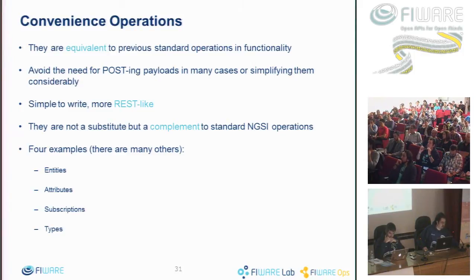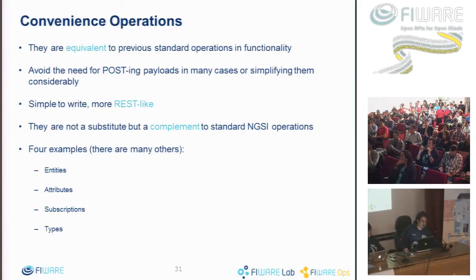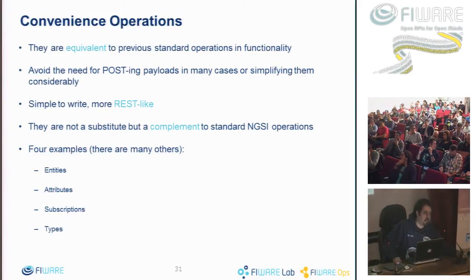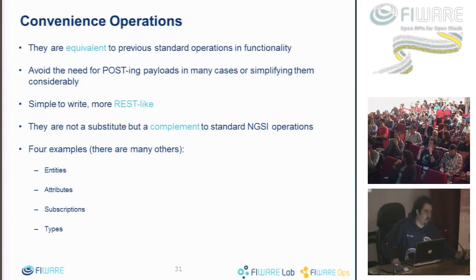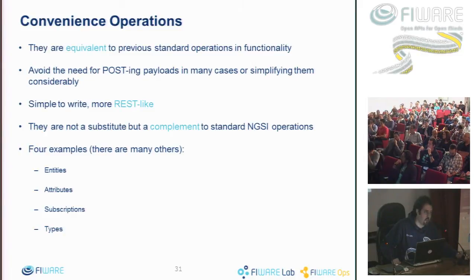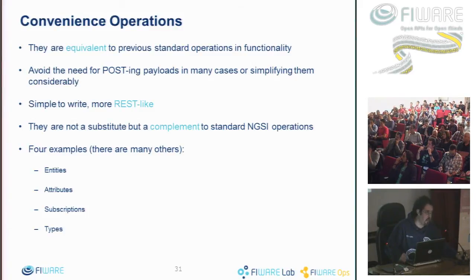In the convenience operations approach, we have REST resources: entities are resources, and attributes of entities are sub-resources of the entity resource. We have a different set of URLs where resource information is encoded in the URL itself, rather than in the payload. The slide explains the different resources: entities, attributes, subscriptions, and entity types.